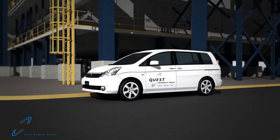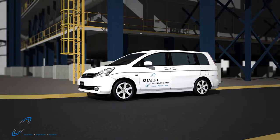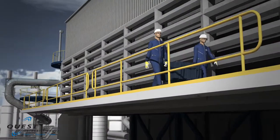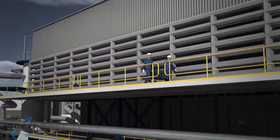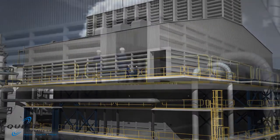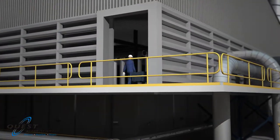Quest Integrity Group's reformer care solution set is an integrity management system for the entire steam reformer, from inlet to outlet, including hot and cold components. This animation focuses on an integral part of the solution, the internal inspection of steam reformer tubes to detect a variety of damage mechanisms.